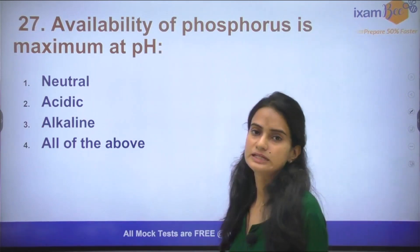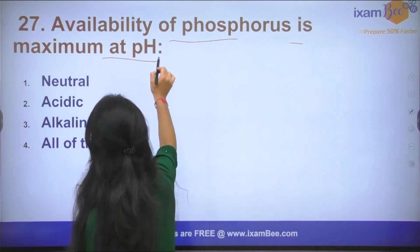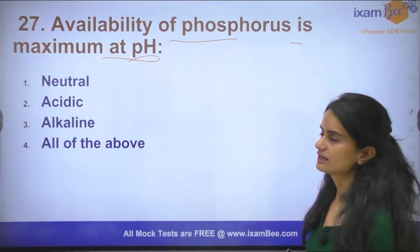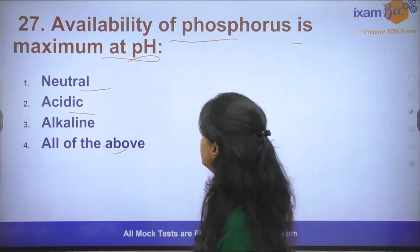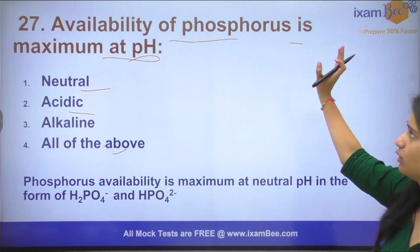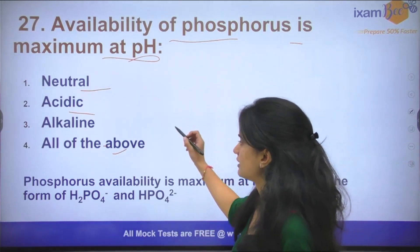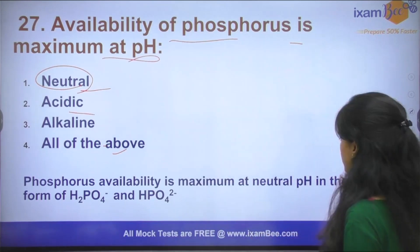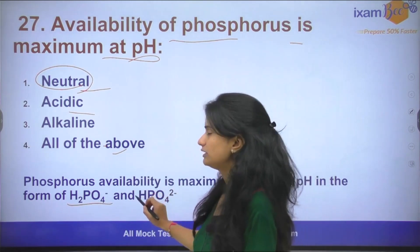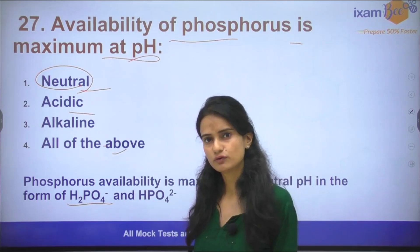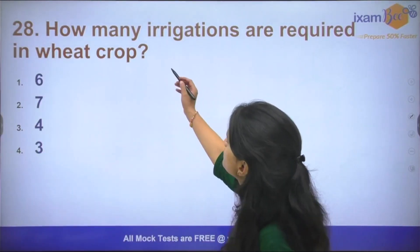Question number 27: Availability of phosphorus is maximum at what pH? Is it neutral, acidic, alkaline, or all? Phosphorus exists in different forms at different pH levels. The most available form is at neutral pH. At neutral pH, the maximum availability of phosphorus occurs in the form of H₂PO₄⁻ and HPO₄²⁻, which plants absorb.